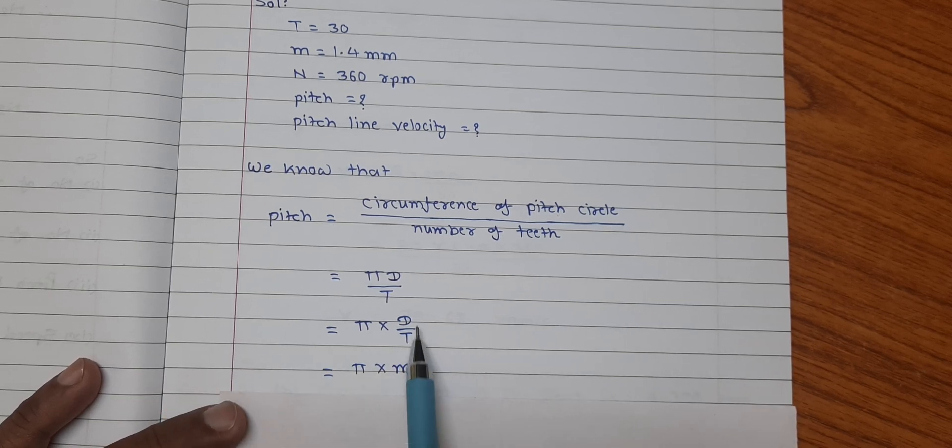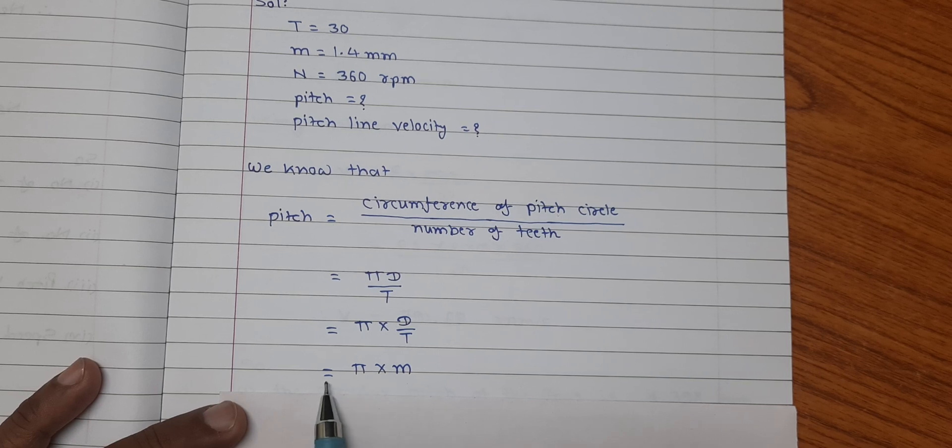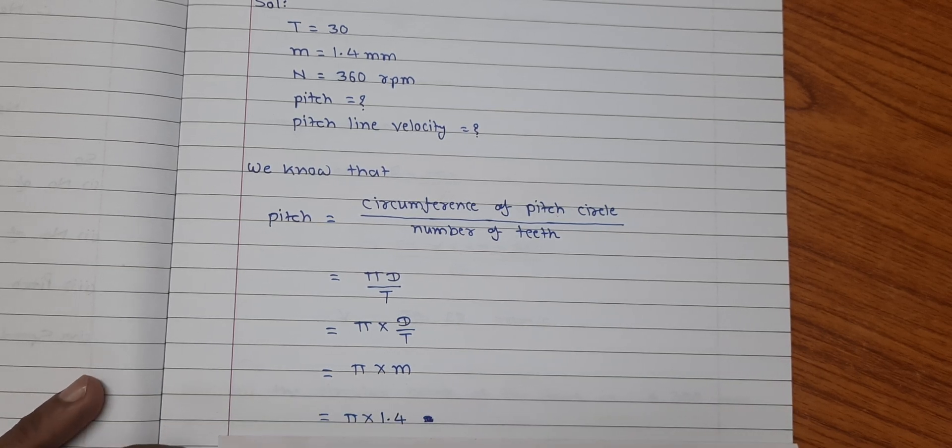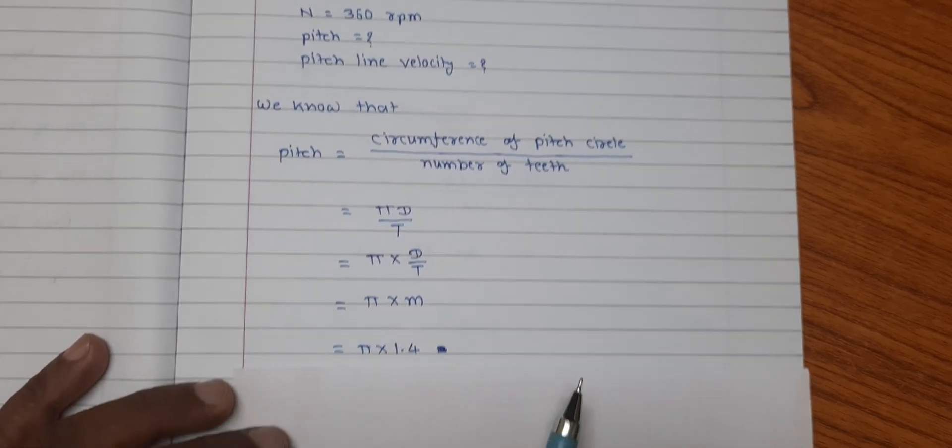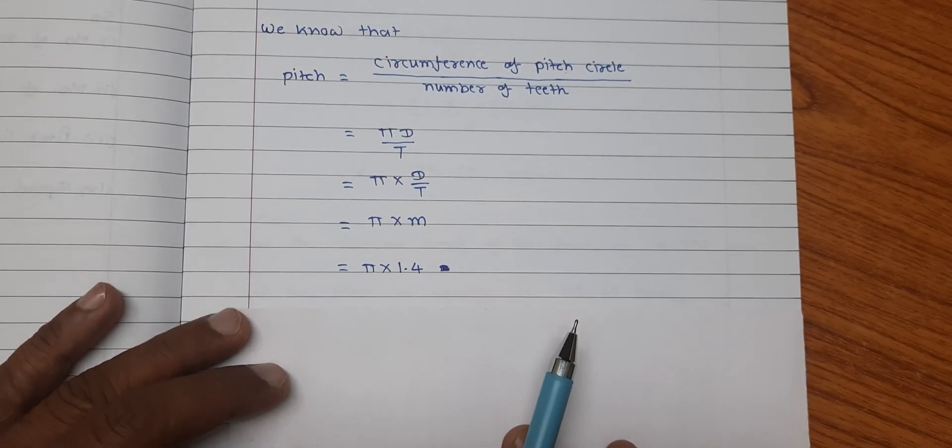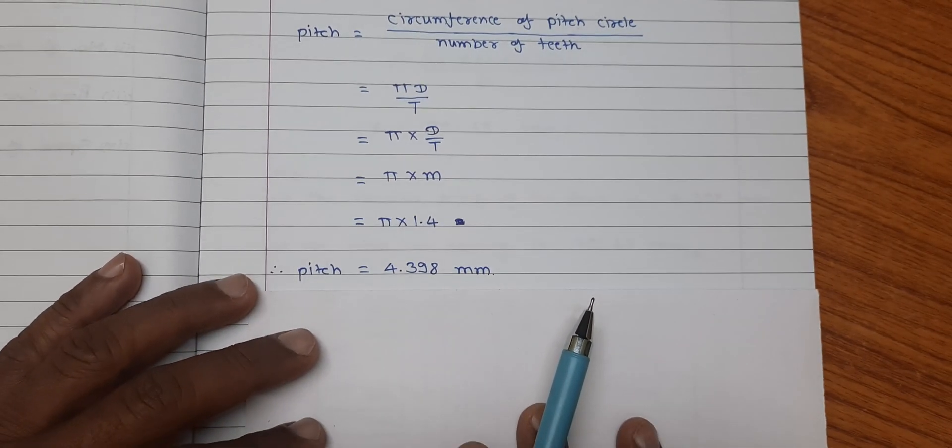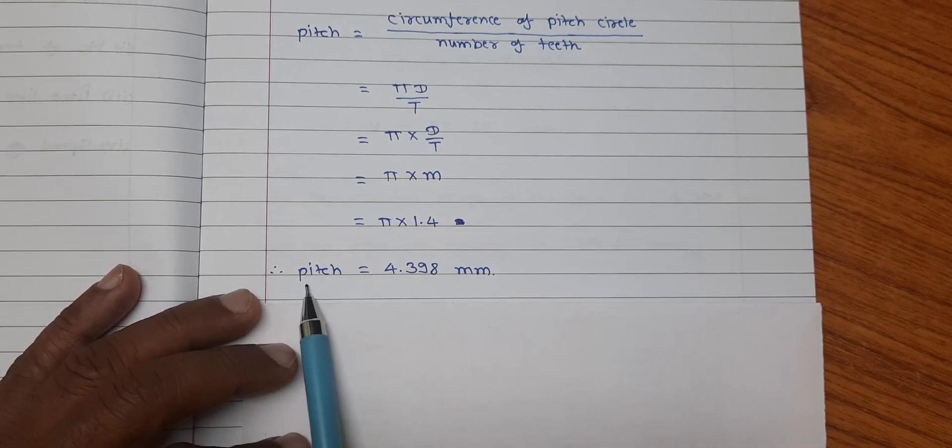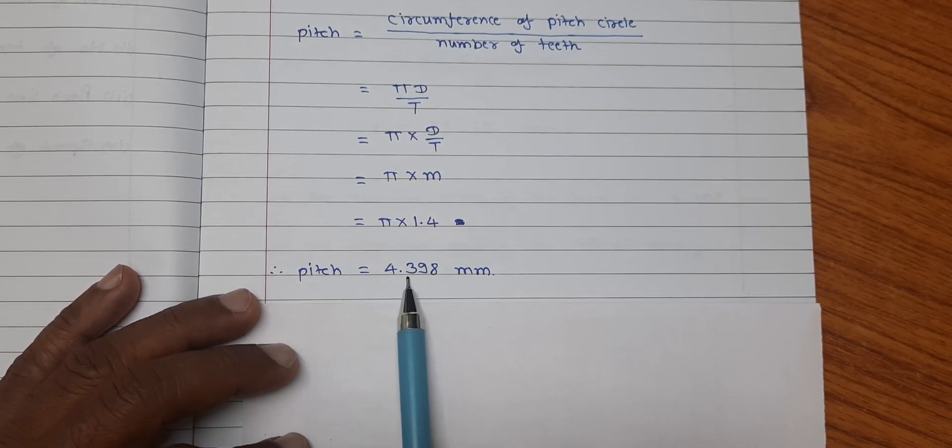But d divided by t is nothing but module. So pitch is equal to pi into m. Upon substitution of value of module that is 1.4, we found on calculation, pitch is equal to 4.398 mm.